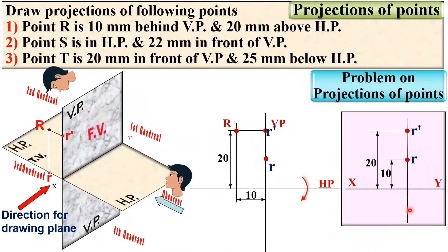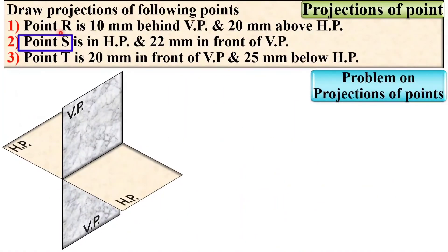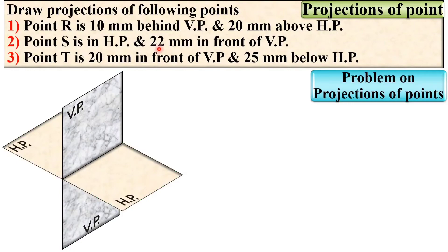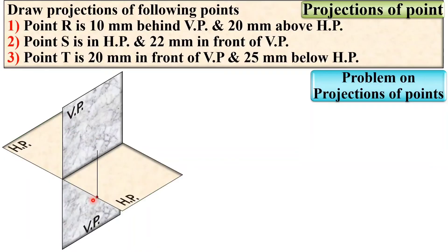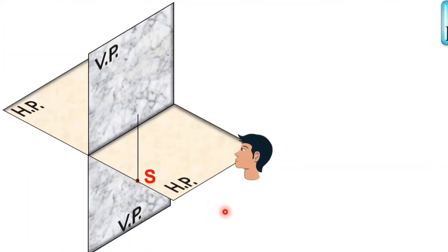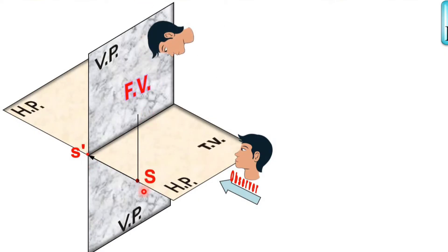Now take the second point, point S. It is given that point S is in HP, and it is 22 mm in front of VP. So this is 22 mm in front of VP, and since it is on HP, it is positioned right there. For the front view, you get S dash on the VP. For the top view, it is on HP and that is denoted by S.